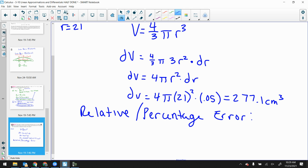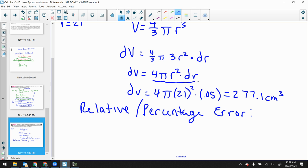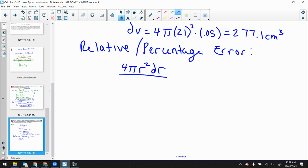Relative or percentage error would be, if you think about any percentage, it's part over whole. So the part, the smaller value is going to be 4 pi r squared dr. And then the bigger value is the actual volume. So 4 thirds pi r cubed. Now, when we reduce this, my pi's are going to cancel. I would get 4 divided by 4 thirds, which is really 4 times 3 fourths, which when I cancel the fourths, that's just going to end up being 3. So this is 3 dr over r. Because my r's cancel on the bottom. 3 dr over r.